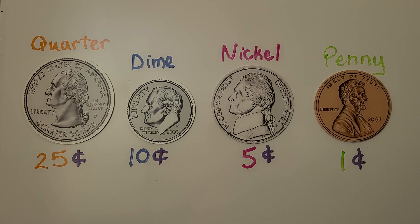For a quick review: a quarter is 25 cents, a dime is 10 cents, a nickel is 5 cents, and a penny is one cent.